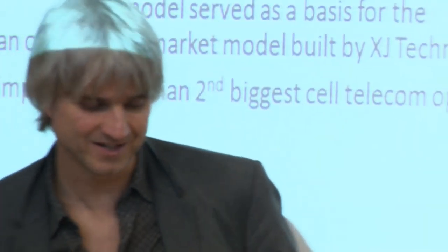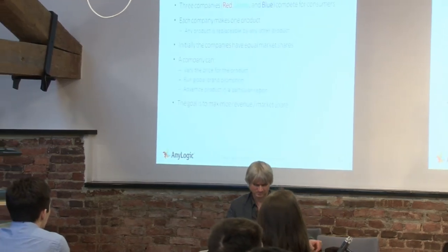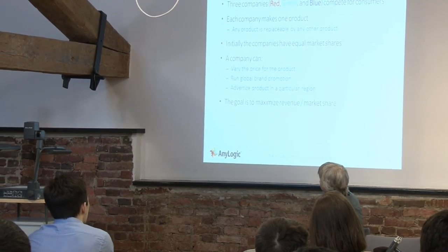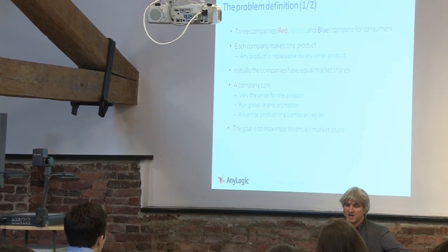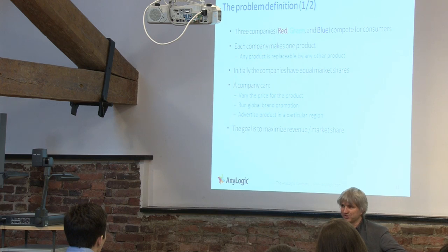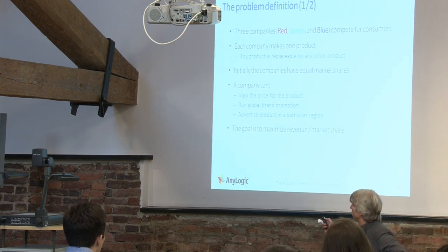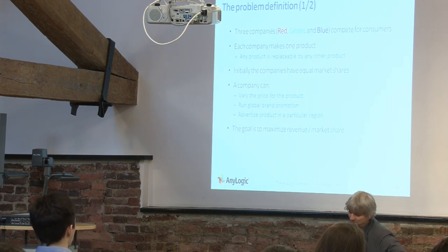What I'll show you is actually a kind of game. We have three companies — red, green, and blue — competing in a market with three products. The products are equally good, so functionally it wouldn't matter whether you buy red or blue. What companies can do is vary price and run promotion campaigns, local or global. The obvious goal of any company is to maximize revenue and maximize market share.